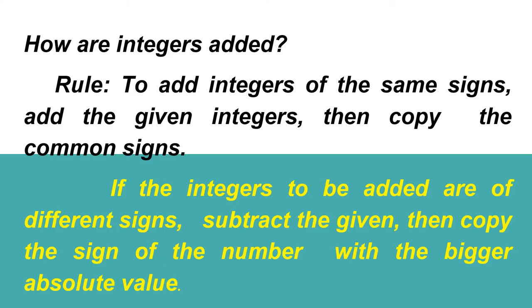How are integers added? For the rule, to add integers of the same sign, we are going to add the given integers, then copy the common sign. You just copy, if they're both positive, then positive is the answer. If they're both negative, then negative is the answer.